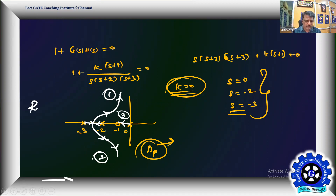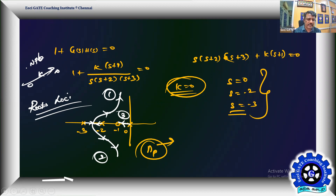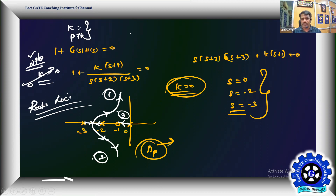The root locus analysis gives three loci: root locus one, two, and three. This root locus concept applies strictly for negative feedback with K varying from zero to infinity. If K takes negative values or feedback becomes positive, the root locus behavior changes. This concludes the video — thank you for watching, and feel free to post doubts in the comments.